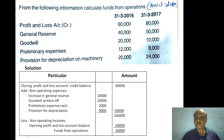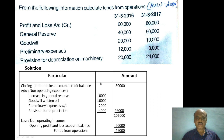The closing profit and loss account credit balance is 80,000 rupees. We then add non-operating, non-cash expenses: increase in general reserve is 10,000 rupees; goodwill written off — 20,000 minus 10,000 gives 10,000 rupees; preliminary expenses written off — 8,000 minus 2,000 gives 6,000 rupees; increase in provision for depreciation — 24,000 minus 20,000 gives 4,000 rupees. So total non-operating expenses to add is 26,000, giving 80,000 plus 26,000 equals 1,06,000 rupees.